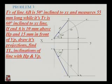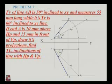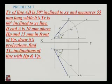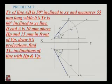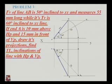The true length A-dash to B1-dash with respect to the horizontal plane is denoted by angle theta. The true length A to B1 with respect to the vertical plane is denoted by phi. This allows us to draw the projection of the front view and top view, and determine the inclination with the horizontal plane and vertical plane.